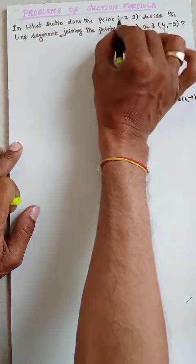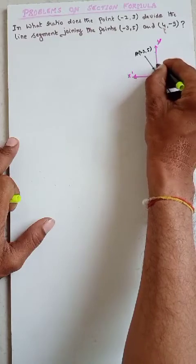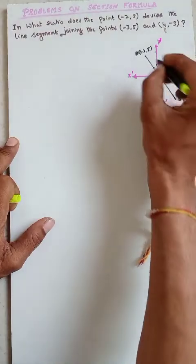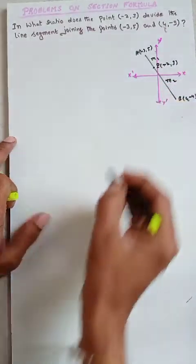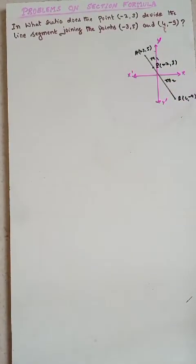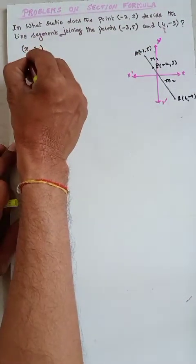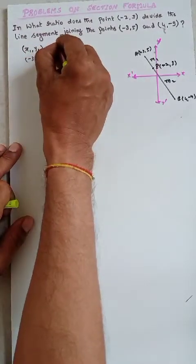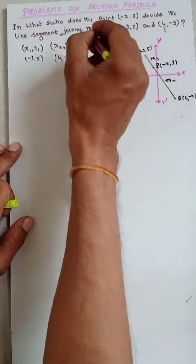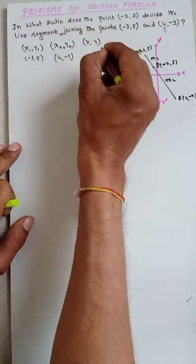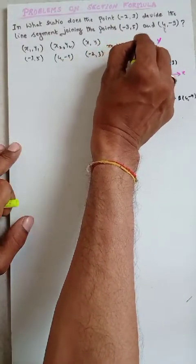Now, let P be the point (−2, 3), which divides the line joining A and B. We do not know in what ratio it divides, so we have to find m1 and m2. Here x1, y1 is (−3, 5); x2, y2 is (4, −9); and the given point P is (−2, 3). We have to find the ratio m1 to m2.